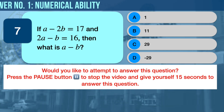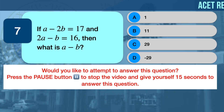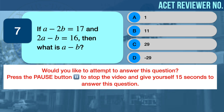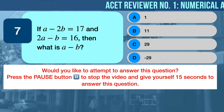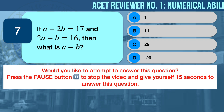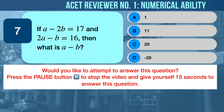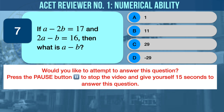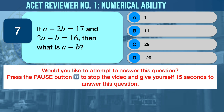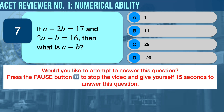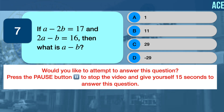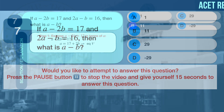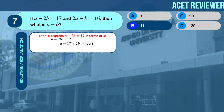Numerical Ability Problem Number Seven: Algebra. If a − 2b = 17 and 2a − b = 16, then what is a − b? A) 1, B) 11, C) 29, D) −29.